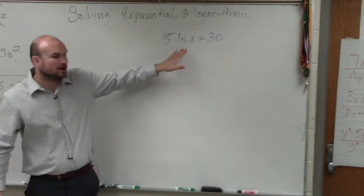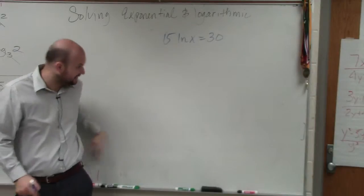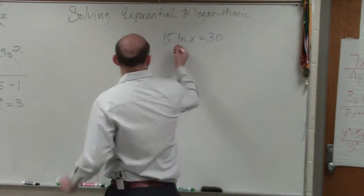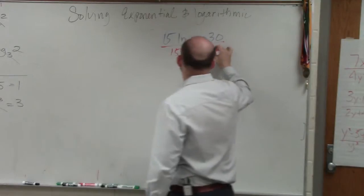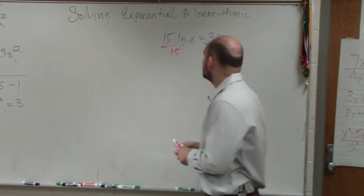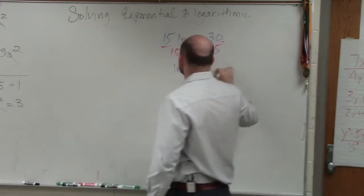Here you can see that my logarithm is being multiplied by 15. To undo multiplying by 15, I divide by 15. Therefore, I have ln of x equals 2.